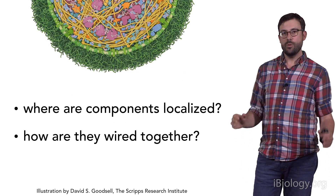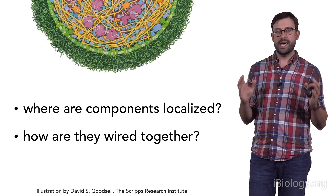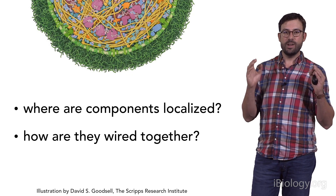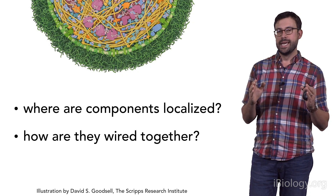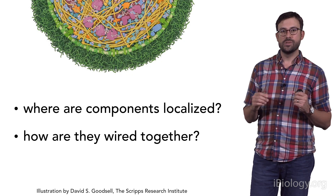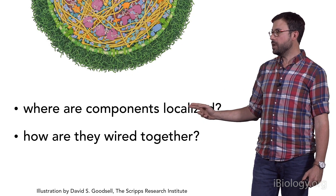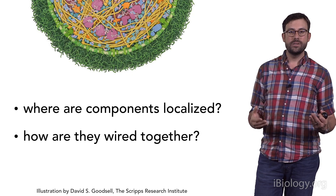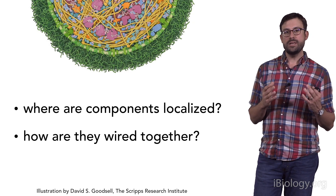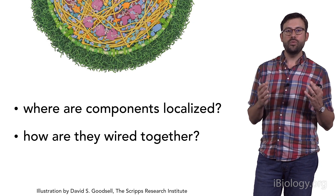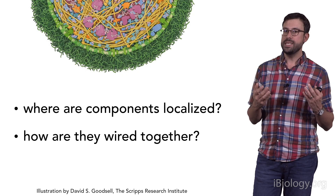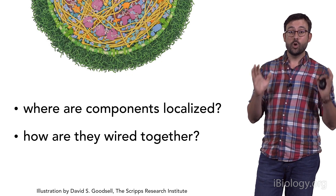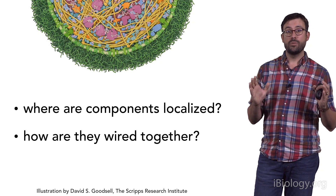Today, we're going to be talking about key methods to tackle this very problem. We're going to take a very protein-centric view of the cell and address two main questions: where are the proteins localized in the cell, and how are they all wired together? My goal is to give you an overview of the different approaches that have been deployed, or could be deployed, at genome-wide scale to get the complete map of a human cell.